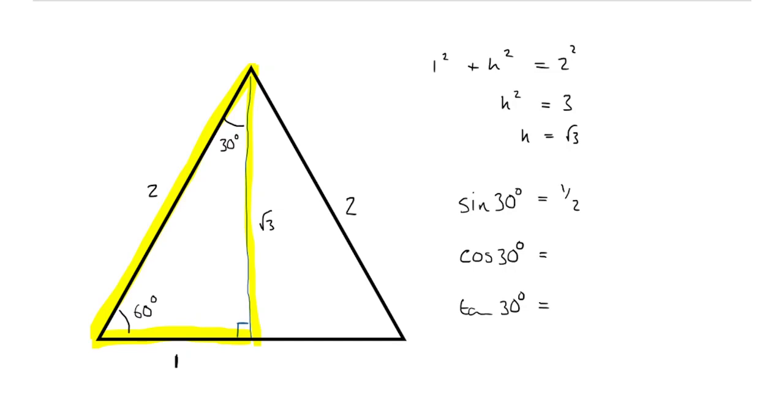Cos 30, what's cos? Cos is adjacent over hypotenuse. So this is the adjacent side, this is the hypotenuse. So cos 30 is root 3 upon 2.